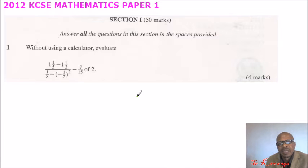So this is 2012 KCSE Mathematics Paper 1. This is section 1, 50 marks. Answer all the questions in the spaces provided.